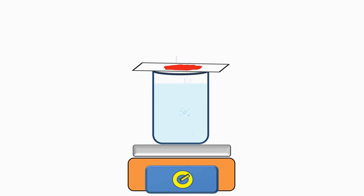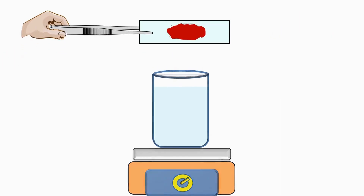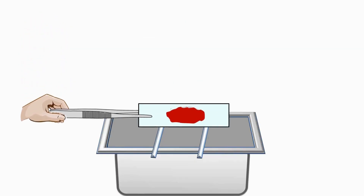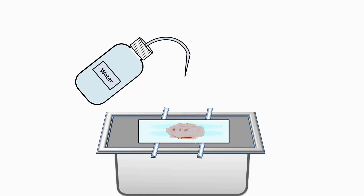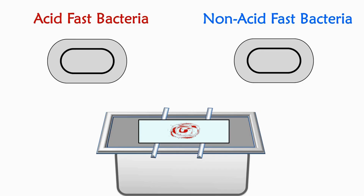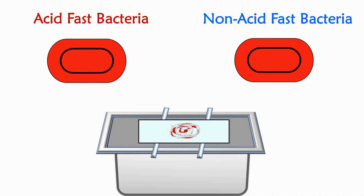Keep the slide on the steam for 5 minutes. After 5 minutes, hold the slide with forceps, keep it on the staining tray, and wash the excess stain from the slide with water. After staining with carbolfuchsin, both acid-fast bacteria and non-acid-fast bacteria get stained and appear red in color.